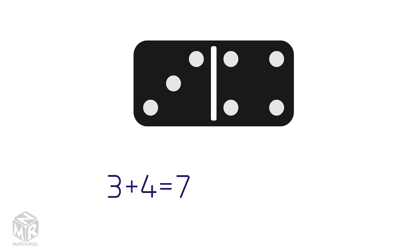3 plus 4 equals 7. 3 and 4 are the add-ins, and 7 is the sum. We can change the order of the add-ins and the sum will remain the same. 4 plus 3 is also equal to 7.